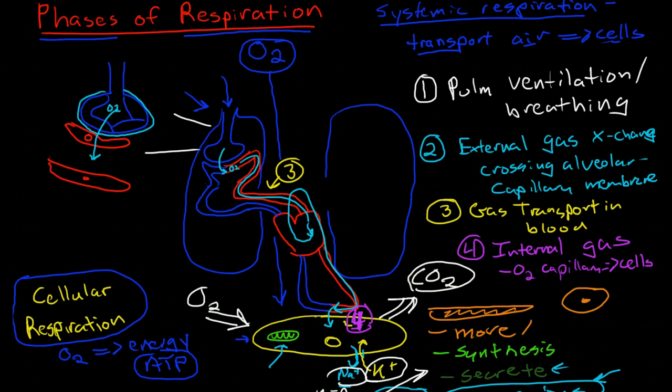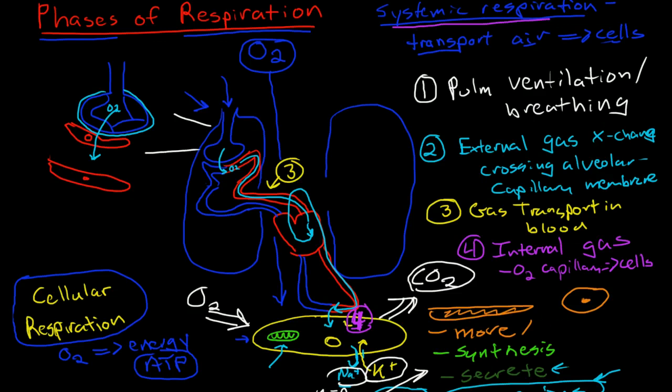So these are the four different phases of systemic respiration, supplying the cells with the oxygen that they need. So that's really the gist of it, that is what's going to happen.